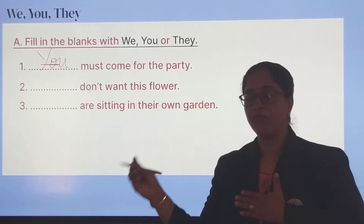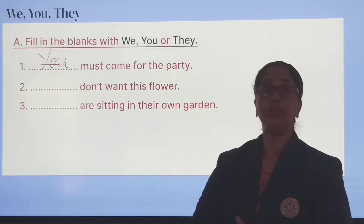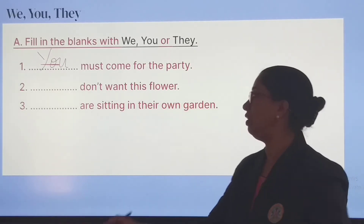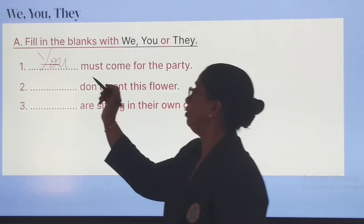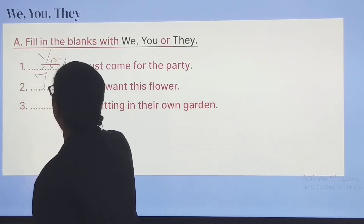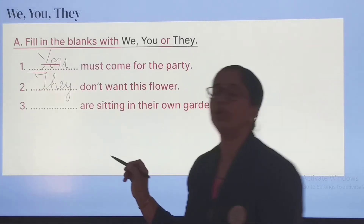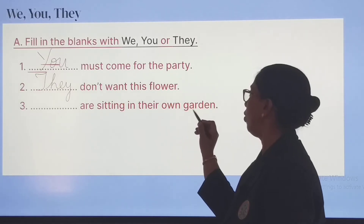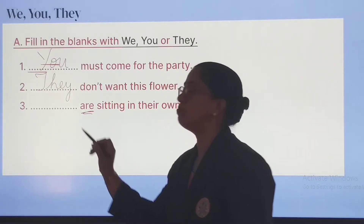For the blank 'dash don't want this flower' — if you and your friend don't want it, put we; if it is many people who don't want the flower, put they. I am going to put they here — They don't want this flower. For 'dash are sitting in their own garden', are means more than one.